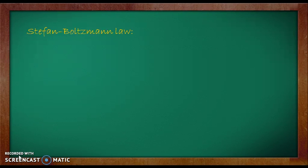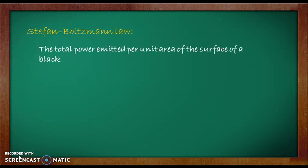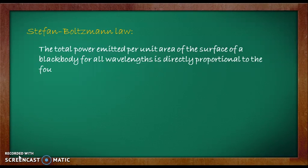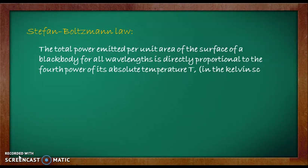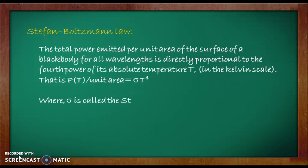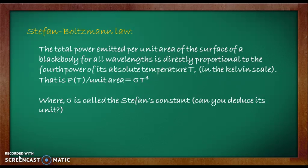The second law observed from the typical plot is the Stefan-Boltzmann Law. It states that the total power emitted per unit area of the surface of a blackbody for all wavelengths is directly proportional to the fourth power of its absolute temperature T, in the Kelvin scale. The sigma in the equation is called Stefan's constant. As a small exercise, I would ask you to deduce its unit — it is very easy.